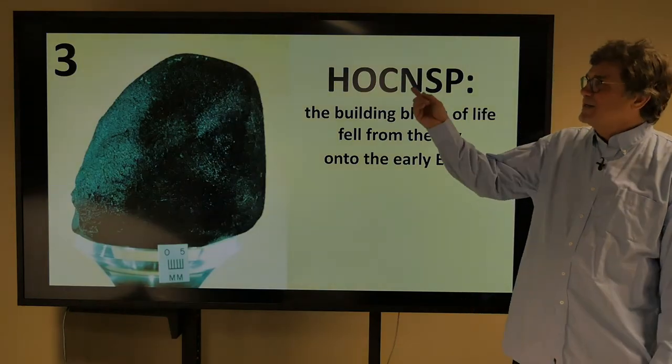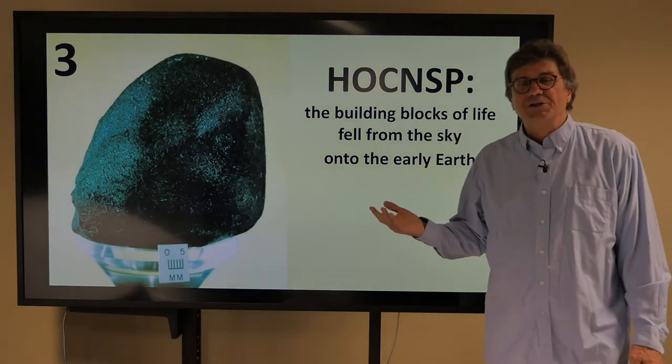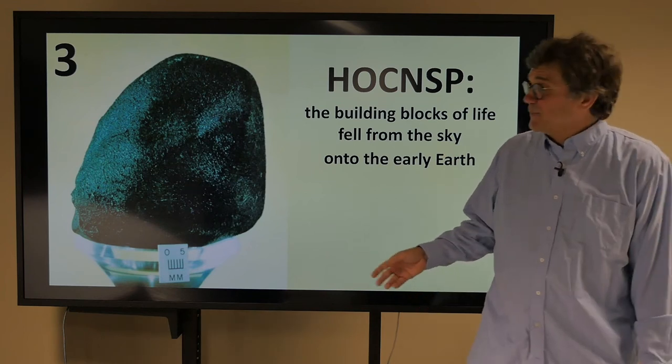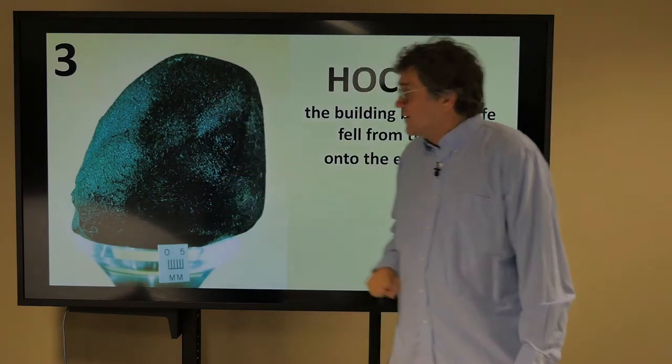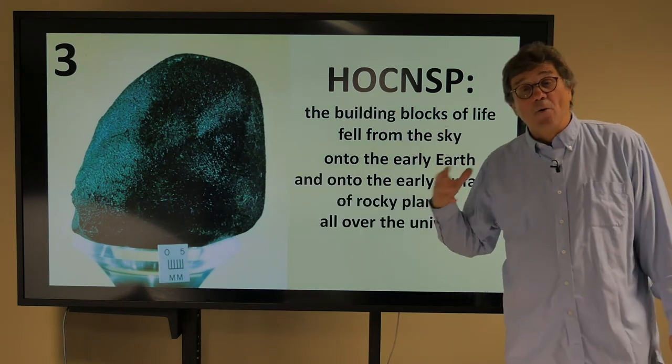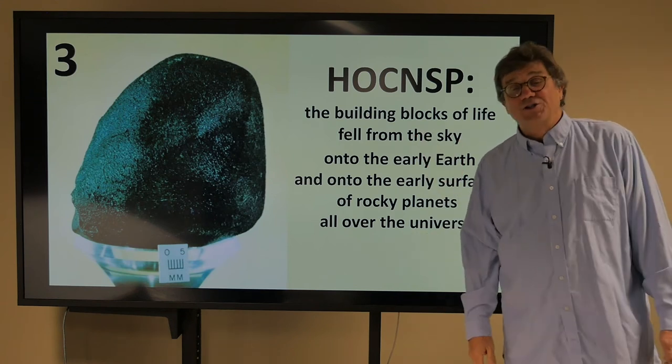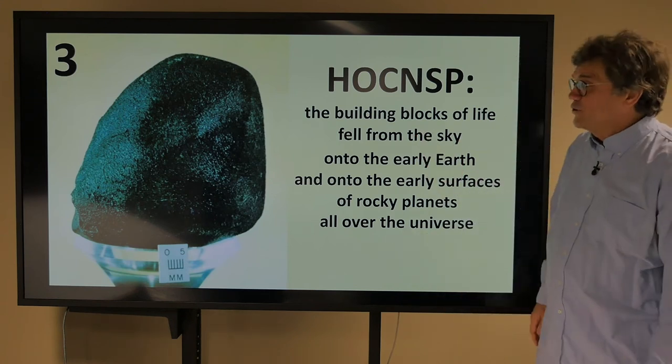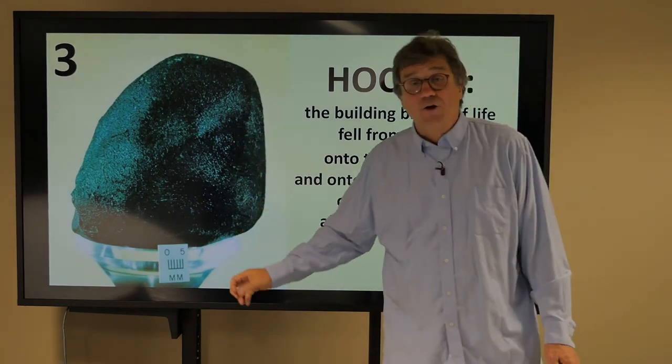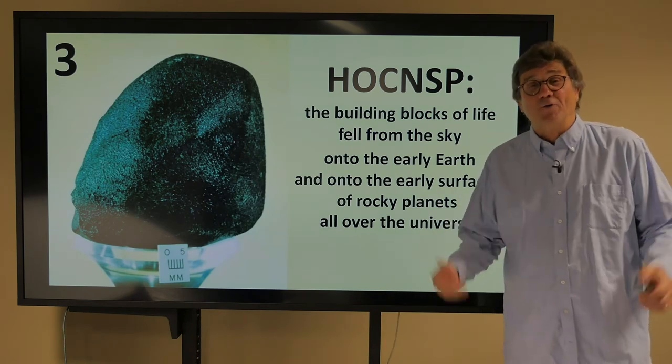Now, what about these elements? These elements are the building blocks of life. They are falling from the sky, literally, on the early Earth, and even today to some extent. This is a carbonaceous chondrite, and inside of it are all these elements. And we think that all these elements also have fallen on the early surfaces of rocky planets all over the universe. So there's nothing special about these things that only landed on Earth. We think they landed on other rocky planets as they were forming as well.